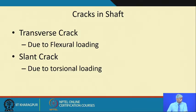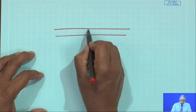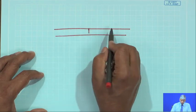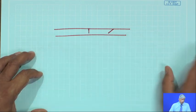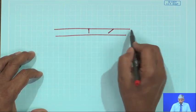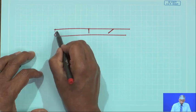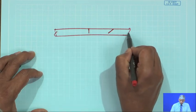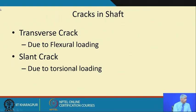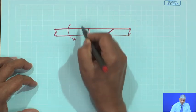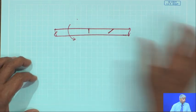The cracks in shafts can be transverse or slant. We will see many methods of how such shafts with cracks can be detected — due to slant crack due to torsions, due to bending, etcetera.